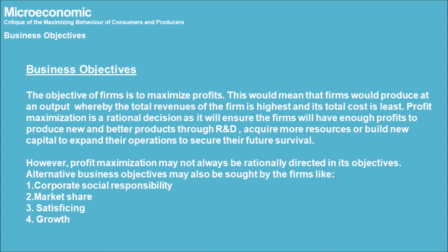Business Objectives. The objective of firms is to maximize profits, meaning firms produce at an output where total revenues are highest and total costs are least. Profit maximization is a rational decision as it ensures firms have enough profits to invest in R&D, acquire more resources, or build new capital to expand operations and secure their future survival. However, profit maximization may not always be the sole rationally directed objective.